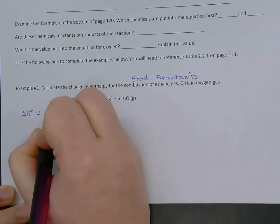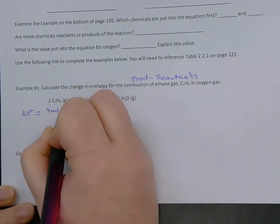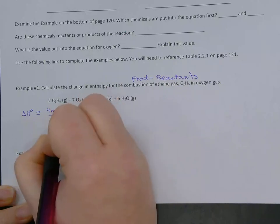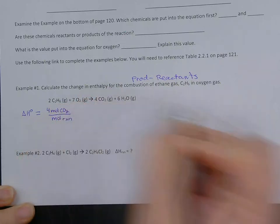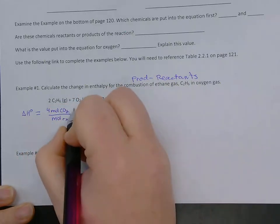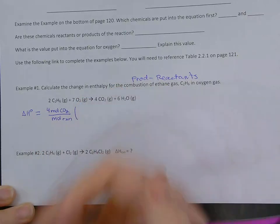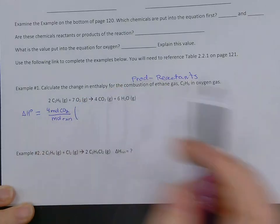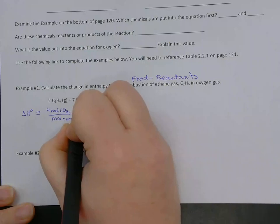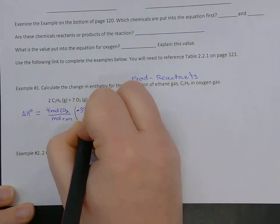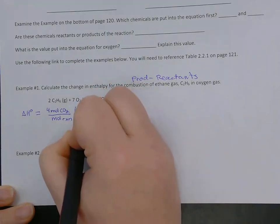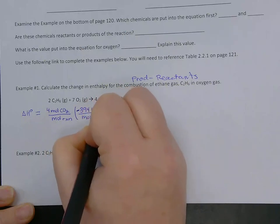We're going to have four moles of CO2 per mole reaction, and you can just use Rxn for reaction, times its value from the table. So CO2 has a value of negative 394 kilojoules per mole of CO2.